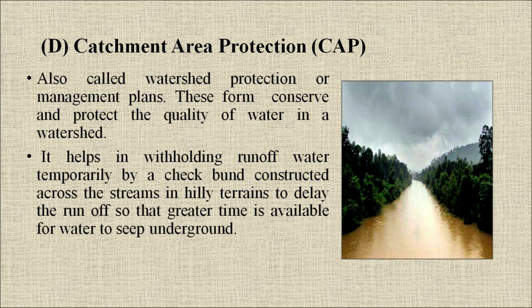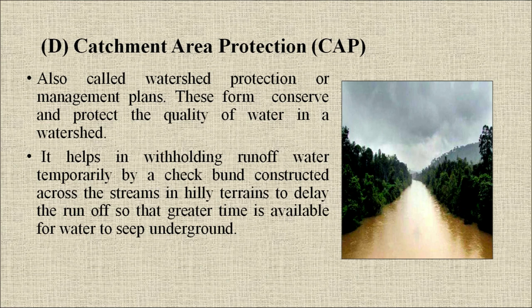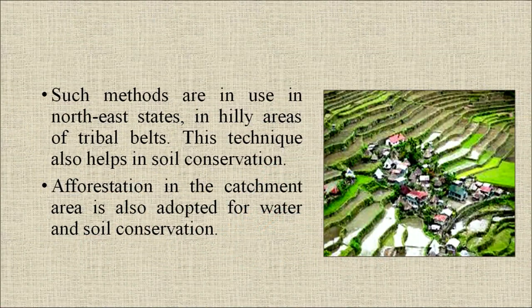Catchment area protection, also called CAP or watershed protection/management plan: these conserve and protect the quality of water in a watershed. It helps in withholding runoff water temporarily by a check bund constructed across the streams in hilly terrain, to delay the runoff so that greater time is available for water to seep underground, as can be seen in the picture on the right-hand side. Such methods are in use in northeast states and hilly areas of tribal belts, and this technique also helps in soil conservation.